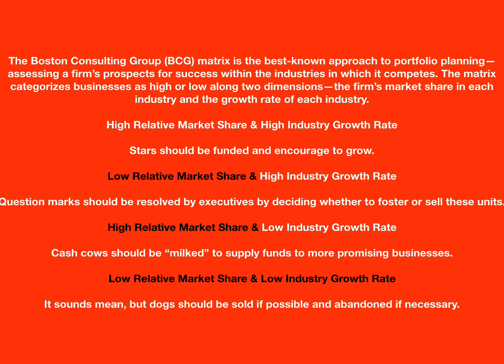You probably remember the Boston Consulting Group matrix — it's everywhere — and that's the whole concept of your products. You could have some stars, you can have some question marks, you can have some cash cows, and you can have some dogs. As you're looking at your results at the end of each round, be looking for those types of products. Maybe you do have some stars, maybe you do have some dogs, and you can decide how you want to handle those situations. Maybe you want to get out of the dog products and move on to something else, put that money into a question mark, and with a little bit of nurturing, you can get a question mark to take off for you.